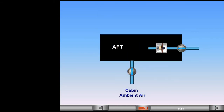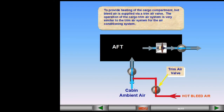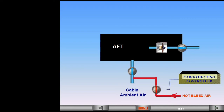To provide heating of the cargo compartment, hot bleed air is supplied via a trim air valve. The operation of the cargo trim air system is very similar to the trim air system for the air conditioning system. A cargo heating controller controls the trim air valve position to regulate the temperature of the compartment. The information is presented on the ECAM conditioning page.